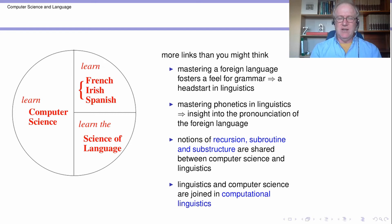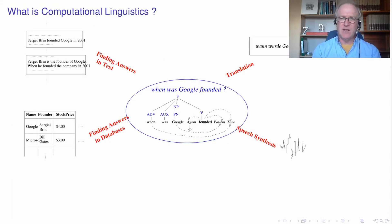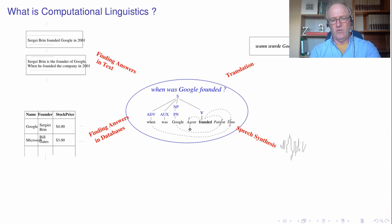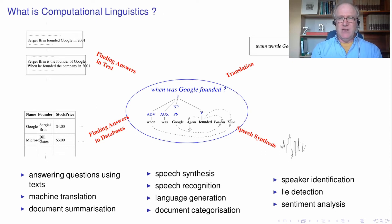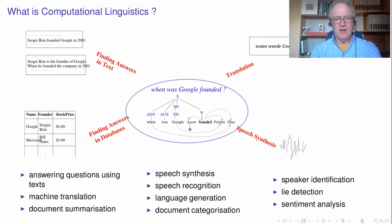The most solid link between the parts is computational linguistics — the technological payoff of aspects of linguistic study. In the middle of a picture of linguistic analysis of a sentence, this can be put to use by computer programming to do cool things. For example, speech synthesis or translation. Other applications include speech recognition, document categorisation, and speaker identification, and the list really goes on — it's a very extendable list. That's because language is such a ubiquitous thing we use for so many things throughout the day.